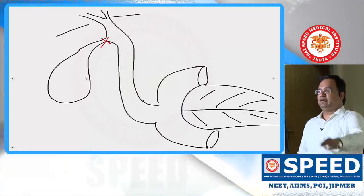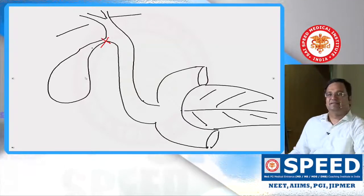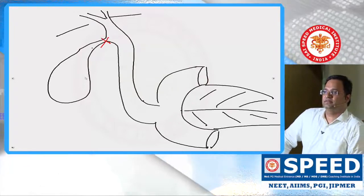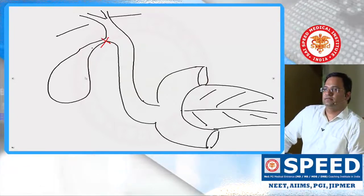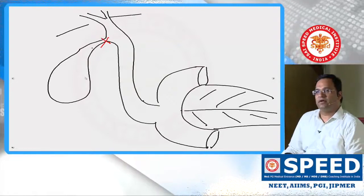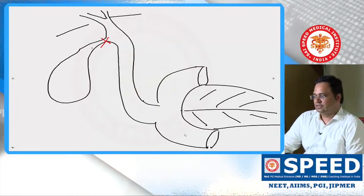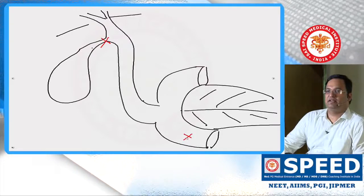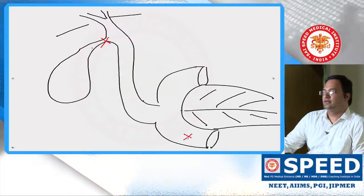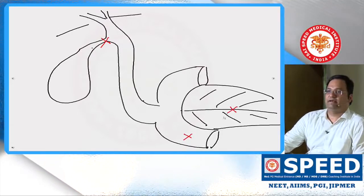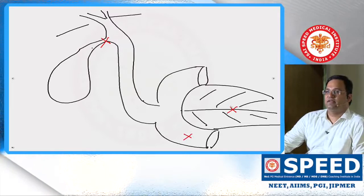Point number one: junction of cystic duct and common hepatic duct. Point number two: junction of the second and third part of the duodenum. Point number three: junction of the body and neck of the pancreas. Connect all these points.